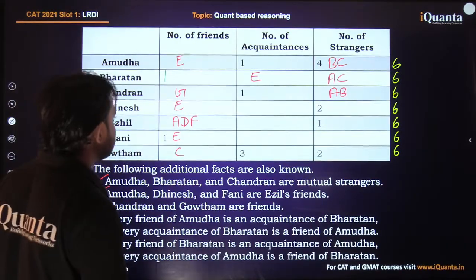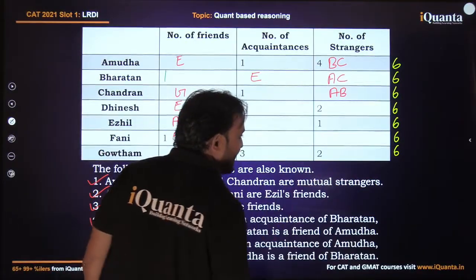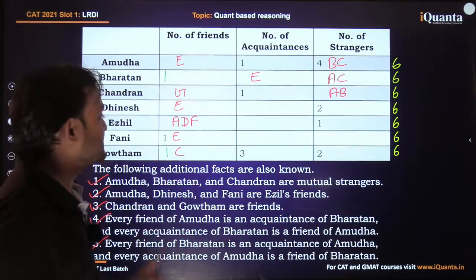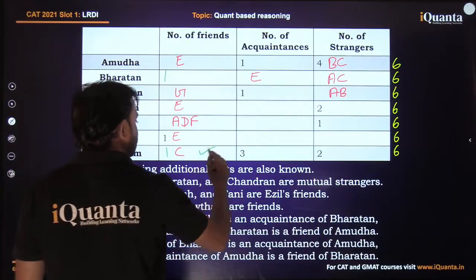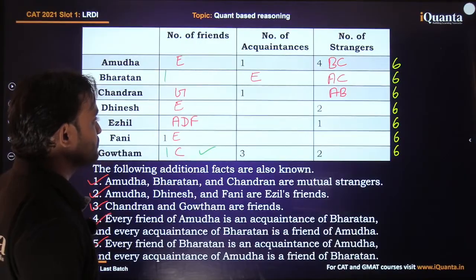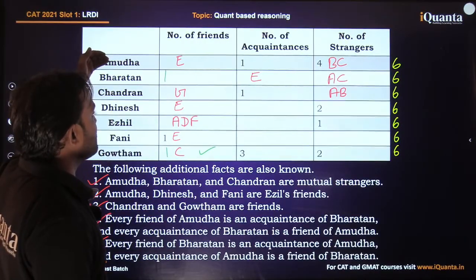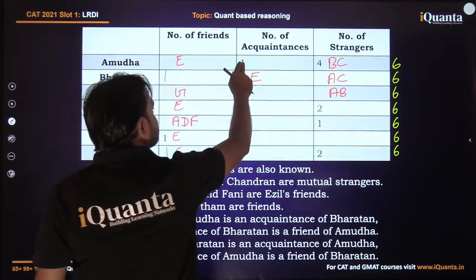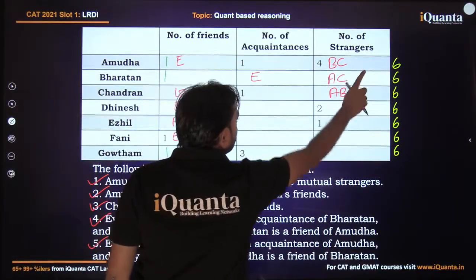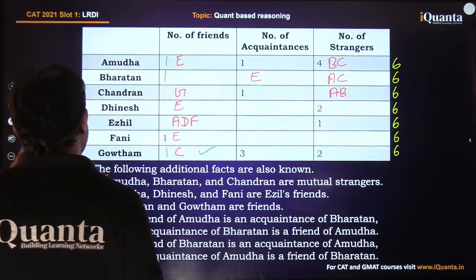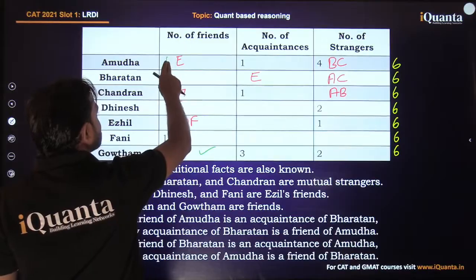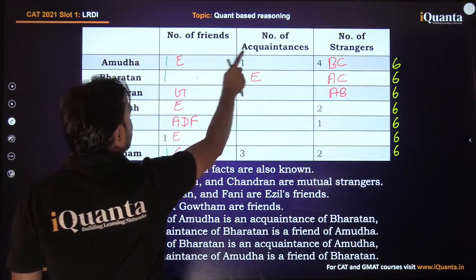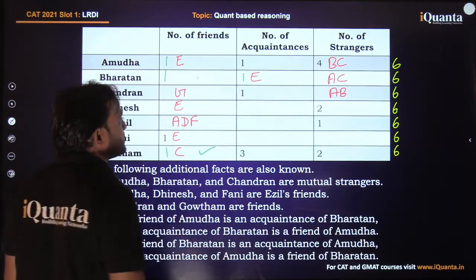We can start with G: the numbers must add up to 6. We have 2 and 3 already, so 1 must be the friends count — G's only friend is C. Moving to A: 4 strangers and 1 acquaintance means 1 friend. For B, since number of acquaintances of A is 1, number of friends of B is also 1. And since A's friends count is 1, B's acquaintances count is also 1.